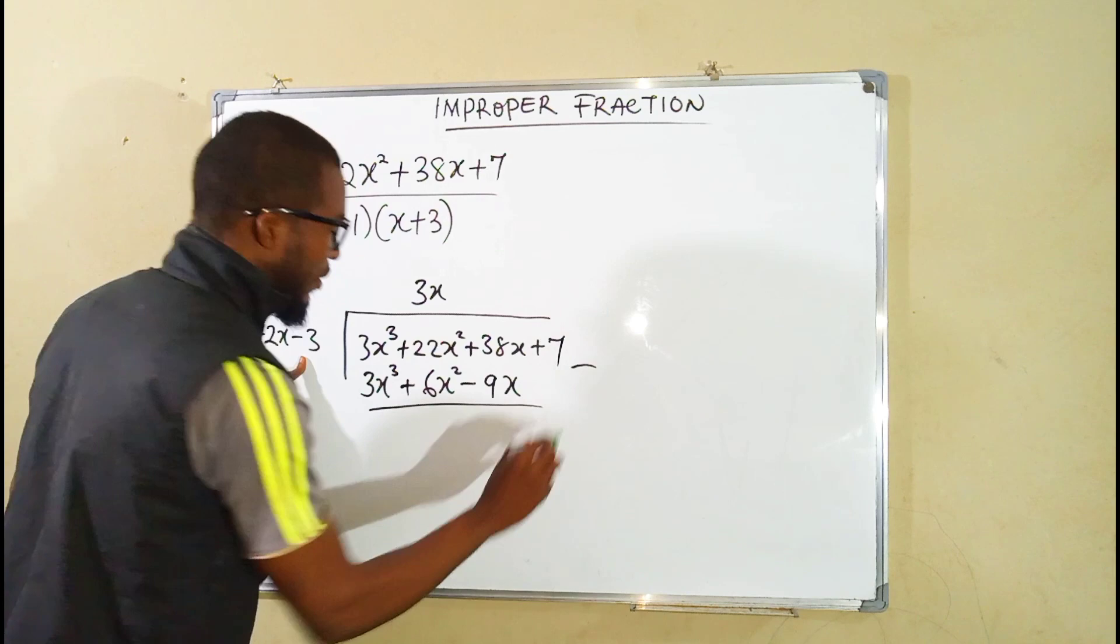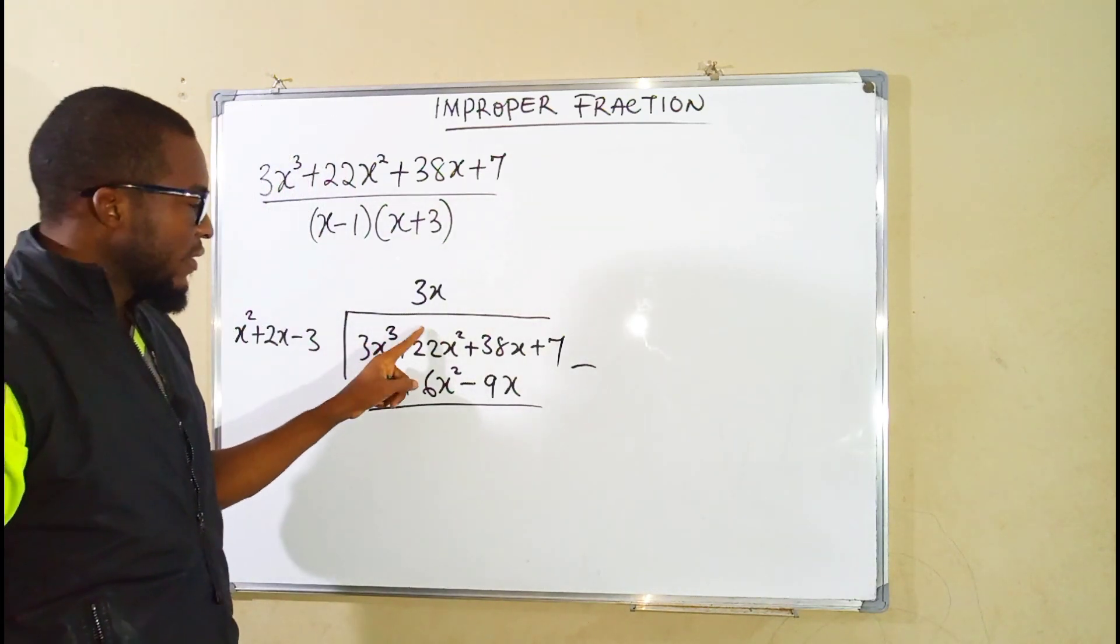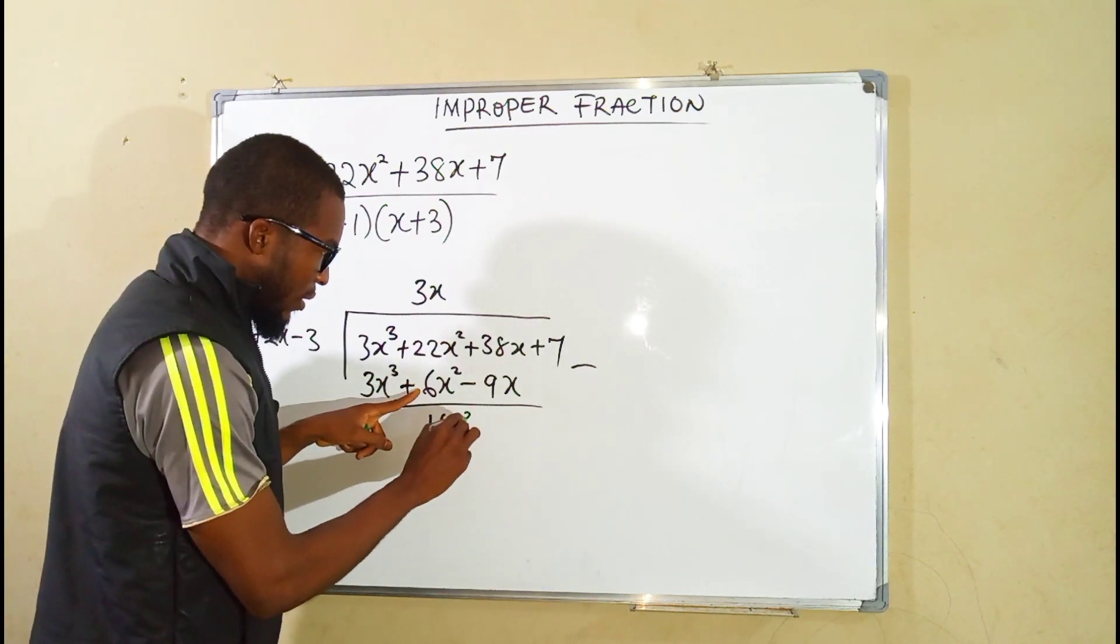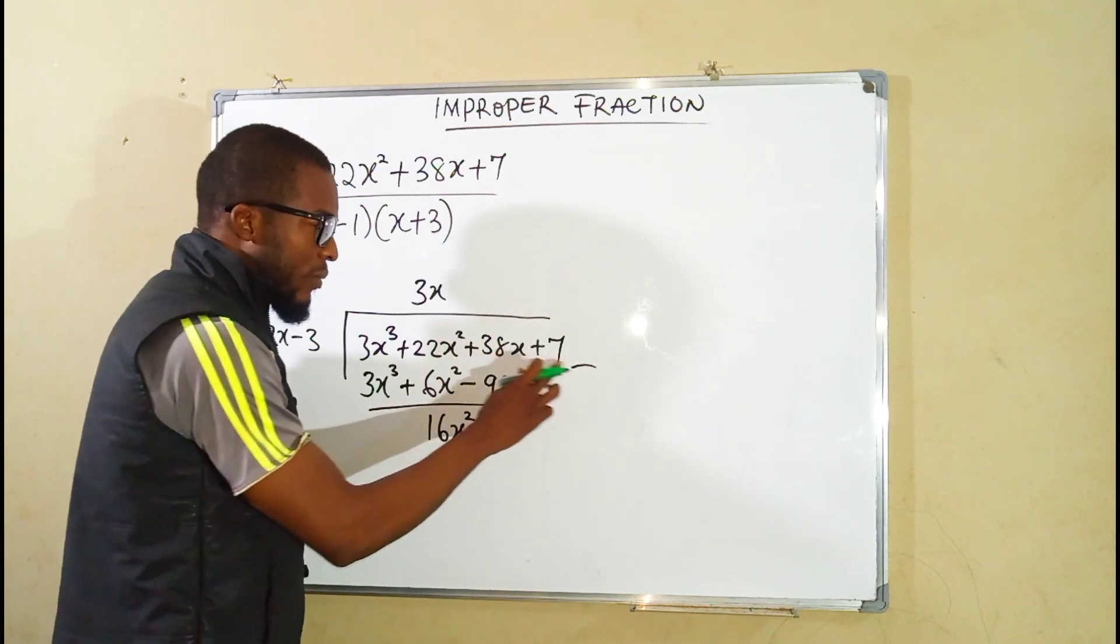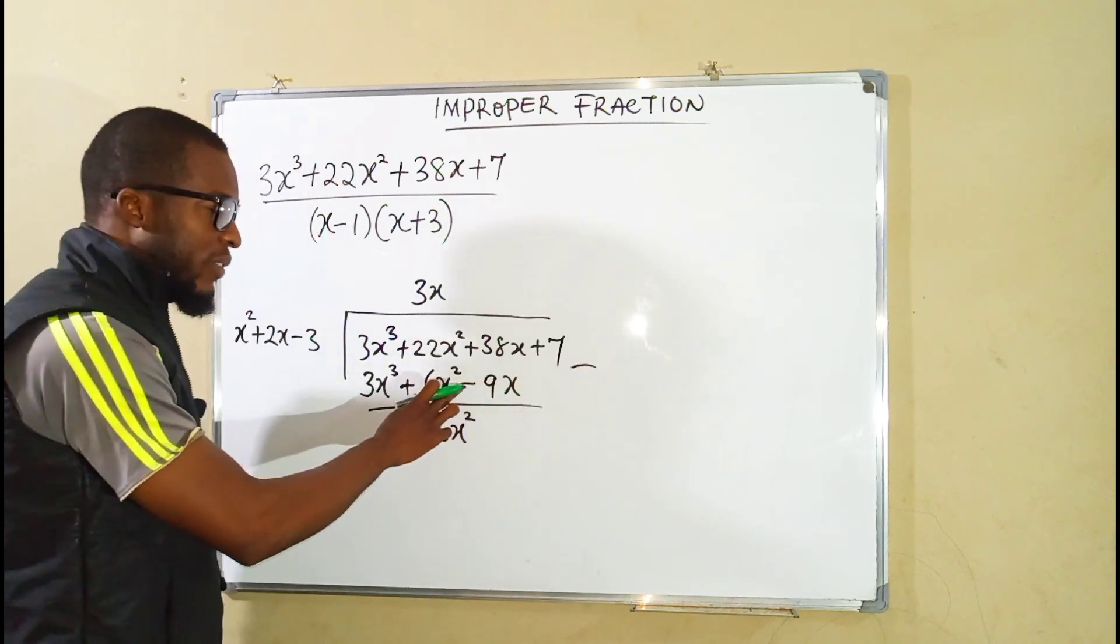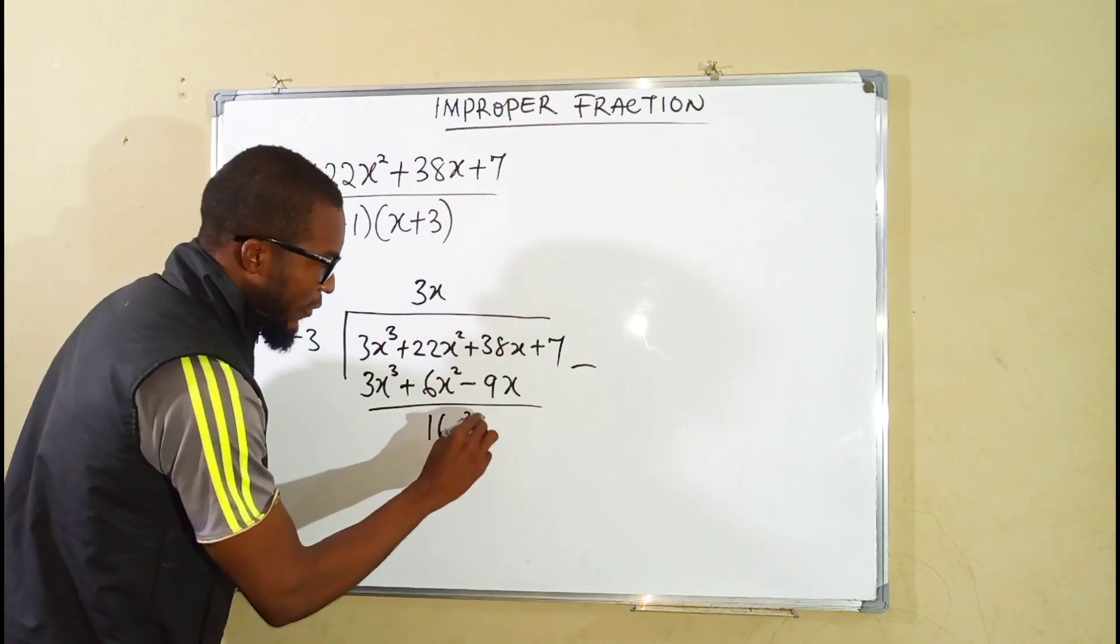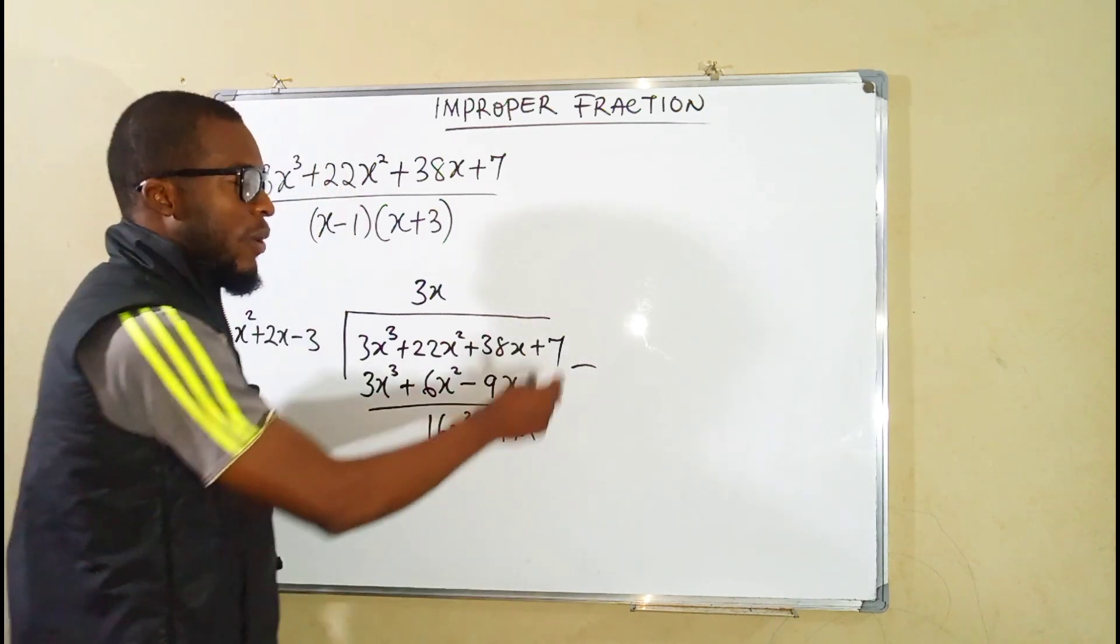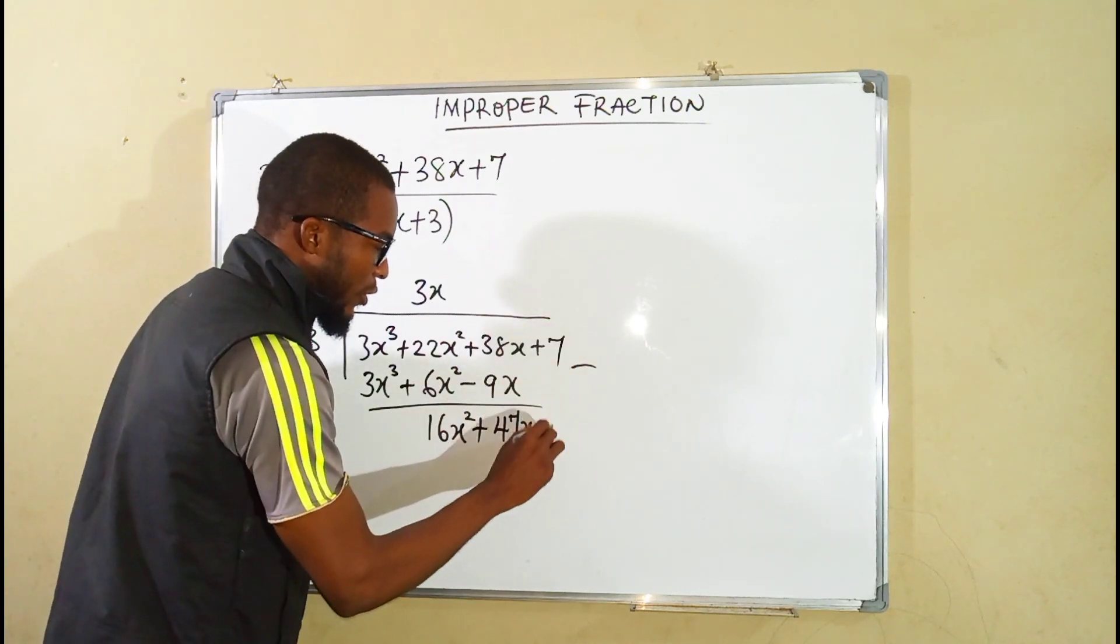We subtract. This minus this is 0. This minus this is 16x squared. Positive 38x minus negative 9x. This negative will transform this negative to positive. So we say 38 plus 9 is positive 47x. And our constant does not have any term to subtract with. So we say plus 7.